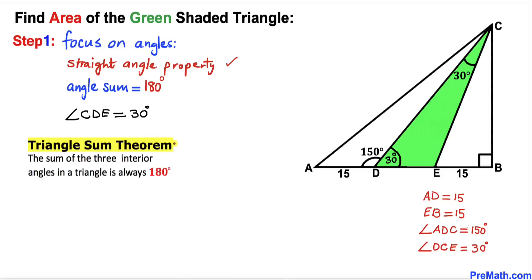Now let's recall the triangle sum theorem. According to this theorem, the sum of the angles in the green triangle must be 180 degrees. Angle CDE is 30 degrees and angle DCE is 30 degrees, therefore the third angle has got to be 120 degrees.